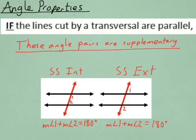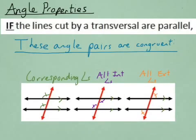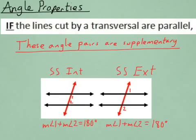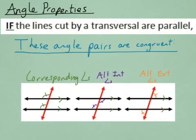Do you notice a pattern in which pairs are congruent and which ones are supplementary? One thing you can look at is to notice that when the angles are alternate interior or exterior, then we know that they're congruent. When they're same side interior or exterior, we know that they're supplementary.